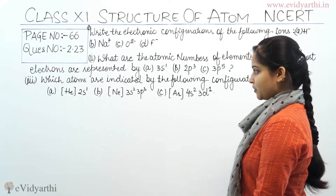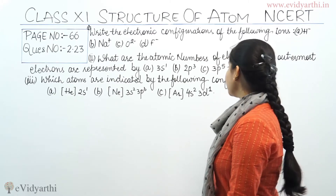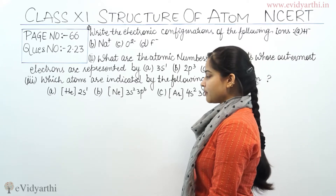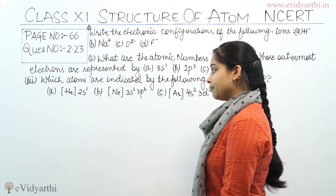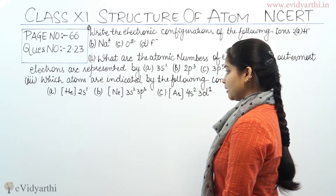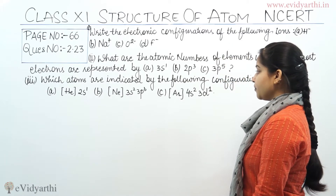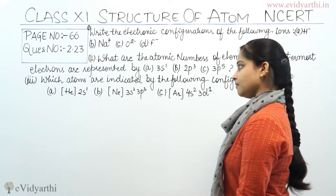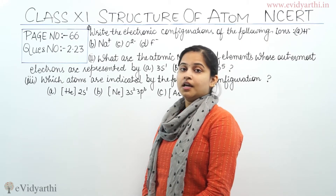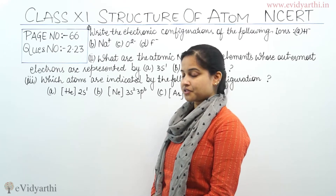The third part of the question is: which atoms are indicated by the following configurations? A) Helium 2s1, B) Neon 3s2 3p3, C) Argon 4s2 3d1. So first of all, I will solve question number 1, that means part 1 of this question.